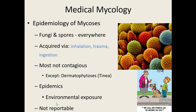When there's an outbreak of a fungal infection, it's normally because a large number of individuals have all had the same environmental exposure — for example, fungal spores in a particular building or air conditioning unit. It doesn't mean it's spreading person to person; it just means many people were exposed to the same fungal spore. Fungal infections are not reportable, so we can't track them.